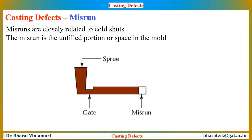Misruns are closely related to cold shut. The liquid metal does not completely fill the mould cavity — a misrun is the unfilled portion or space in the mould. Misruns occur when the liquid metal is too cold to flow to the extremities of the mould cavity. Similar to cold shut, misrun is usually a result of lack of fluidity of the molten metal or a poor design of the gating system. To avoid misruns, one needs to have a proper mould design, gating system design, and adequate molten metal fluidity.